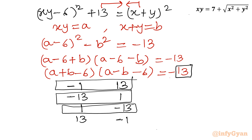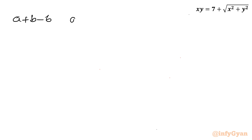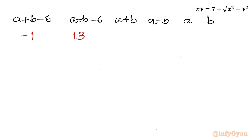We'll use a chart method with columns for (a + b − 6), (a − b − 6), then (a + b), (a − b), then a, b, and the resulting quadratic equation. The four combinations are: (−1, 13), (−13, 1), (1, −13), and (13, −1).